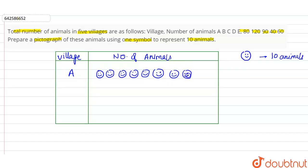Now in village B there are 120, so we have to make 12 such symbols: 1, 2, 3, 4, 5, 6, 7, 8, 9, 10, 11 and 12.